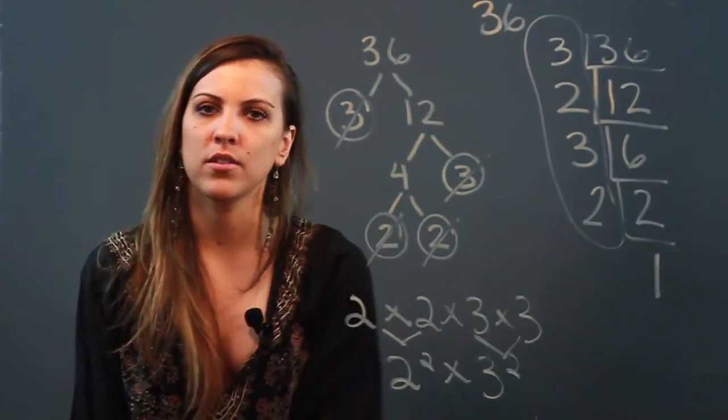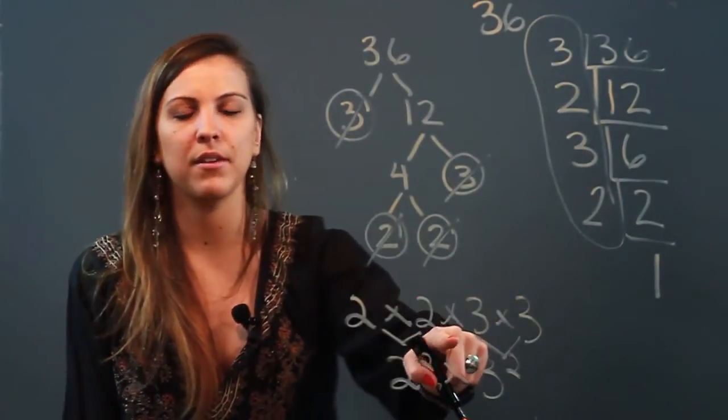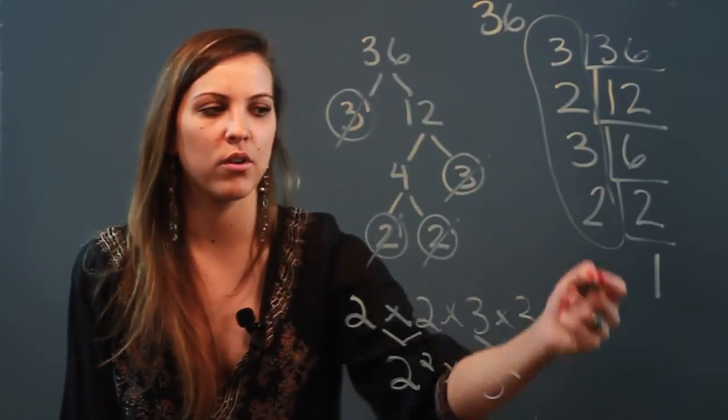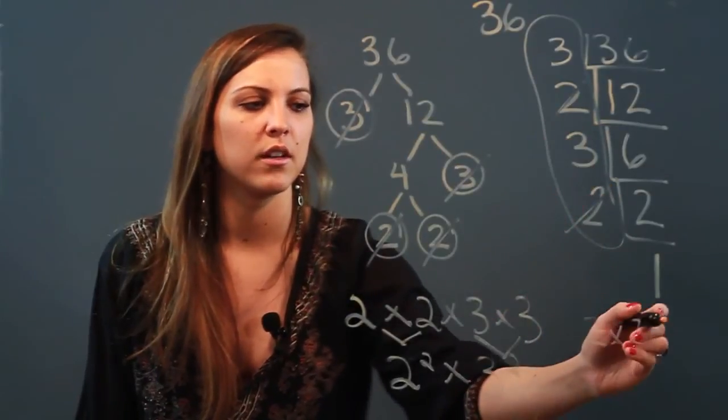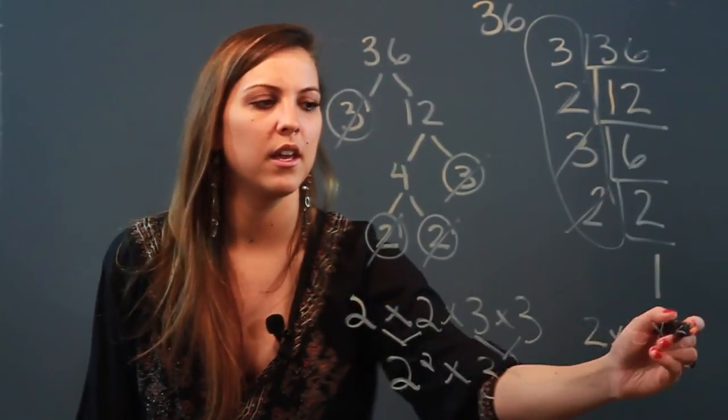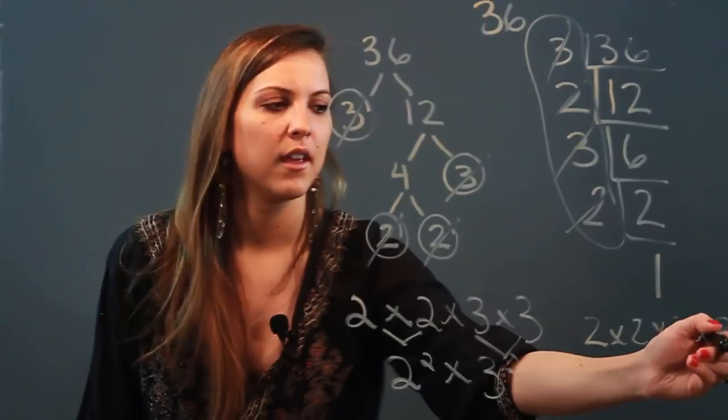All these numbers right here on your side are your prime factorization. You notice they're the same numbers I have here, just in a different order, so I'm going to reorder this from least to greatest: 2 times 2 times 3 times 3, and I'm done.